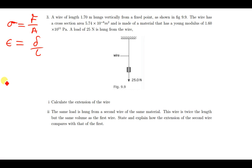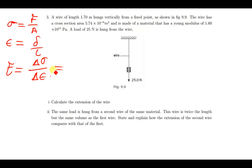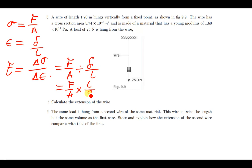When we combine the two by dividing, we get what is called the Young's modulus. The Young's modulus is the ratio of stress over strain. So this is the same as saying force over area, divided by extension over the original length.